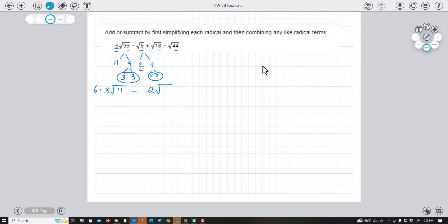The 18 could be 2 times 9, and then 9 is 3 times 3, so I'm pulling out a 3 and I'm left with the square root of 2.